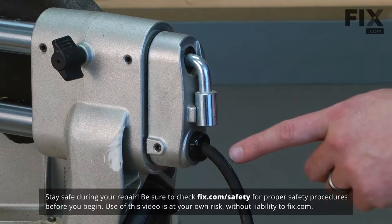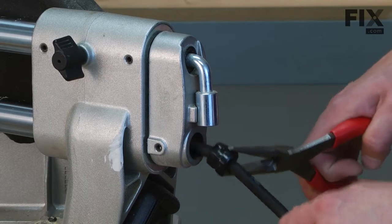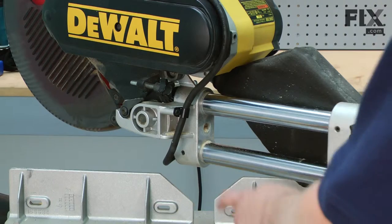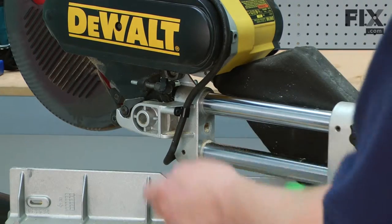On the back of the saw, the cord is held in place with a strain relief. I'll remove that first. Next, we'll remove this cord clip that secures the cord to the saw body.